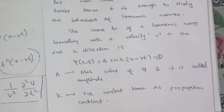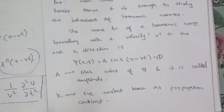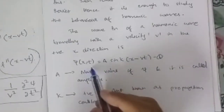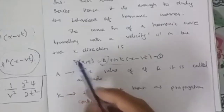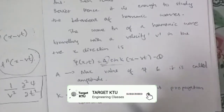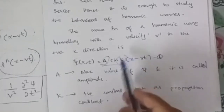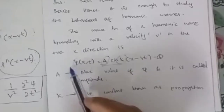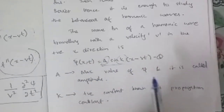The wave function of a harmonic wave traveling with velocity v in the positive x direction is ψ(x,t) = f(x − vt). The simplest such function uses sine: ψ(x,t) = A·sin(kx − vt). That is our solution.